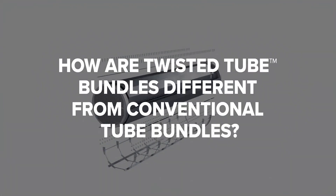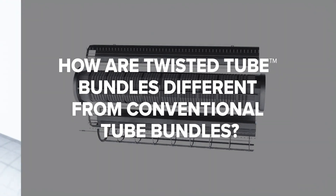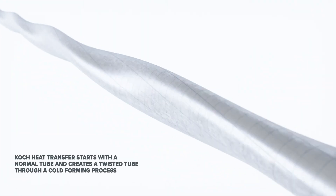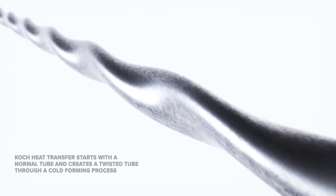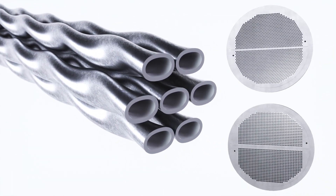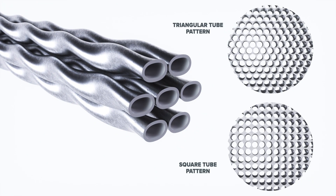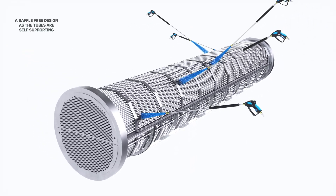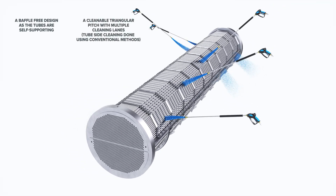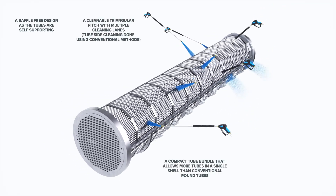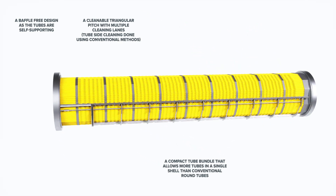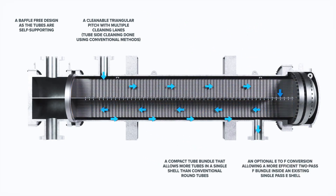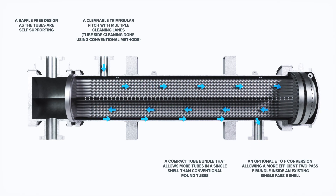How are twisted tube bundles different from conventional tube bundles? Koch Heat Transfer starts with a normal tube and creates a twisted tube through a cold-forming process. When these tubes are grouped together, they form a triangular tube pattern as opposed to the square tube pattern found in many conventional tube bundles. The triangular tube geometry allows for a baffle-free design as the tubes are self-supporting, a cleanable triangular pitch with multiple cleaning lanes, a compact tube bundle that allows more tubes in a single shell than conventional round tubes, and an optional E to F conversion, allowing a more efficient two-pass F bundle inside an existing single-pass E shell.